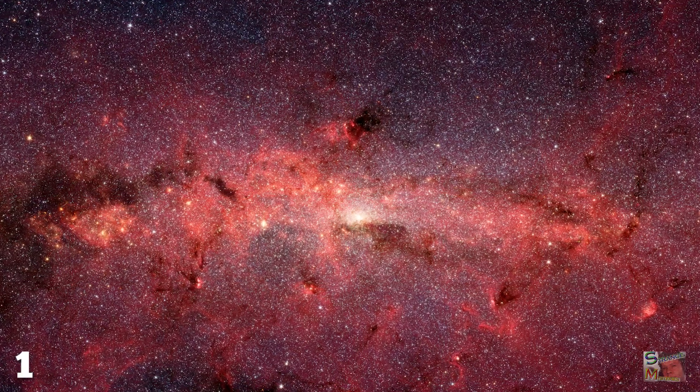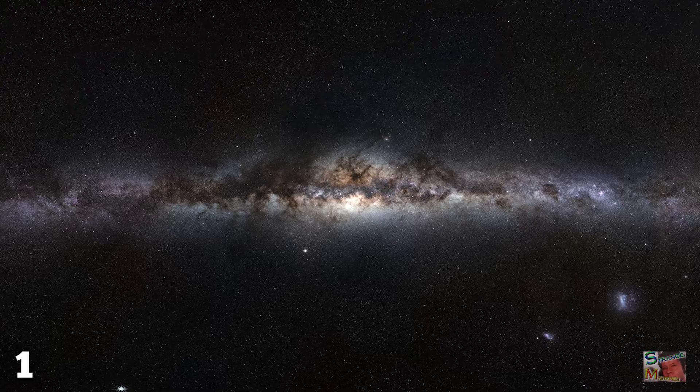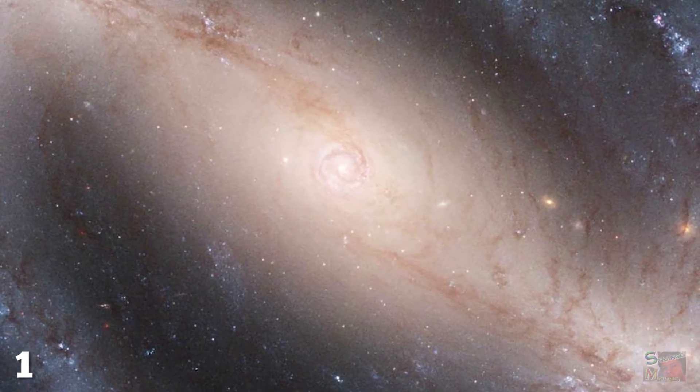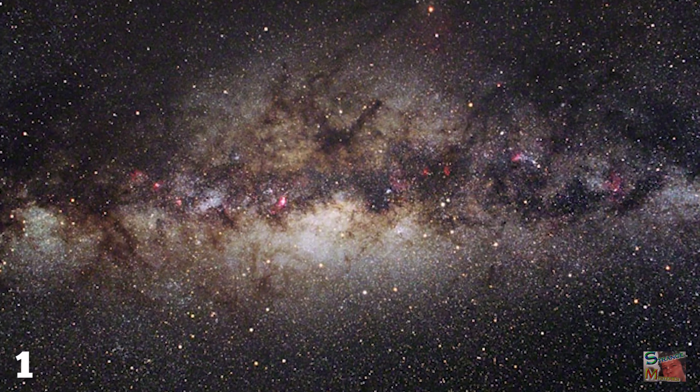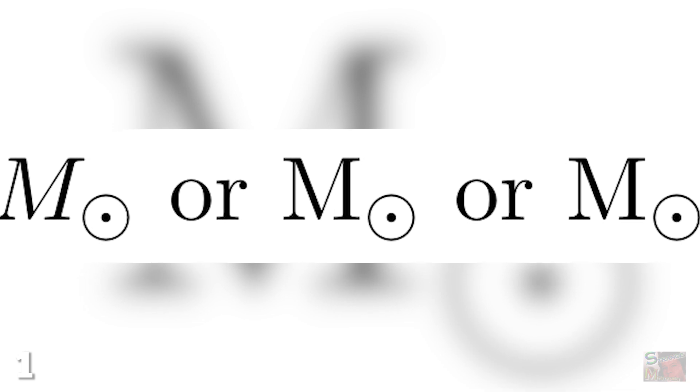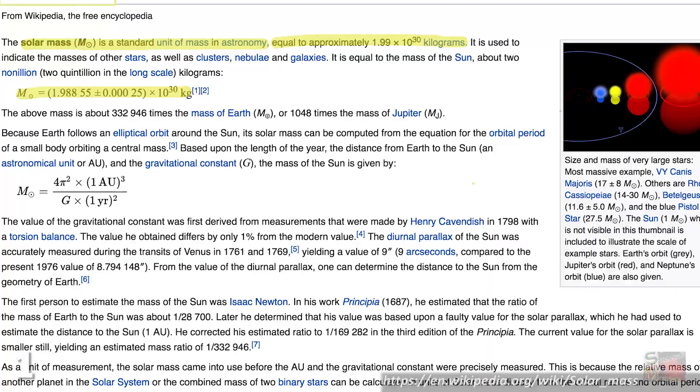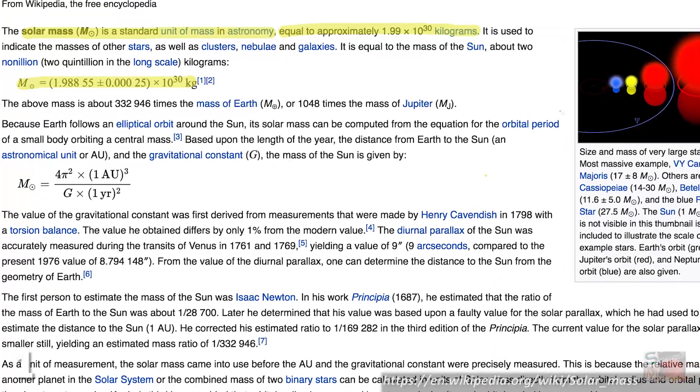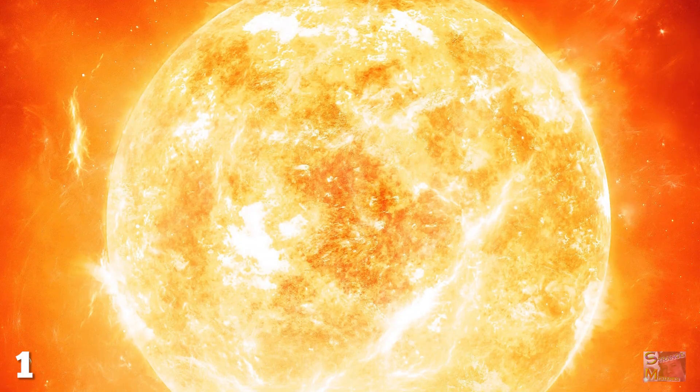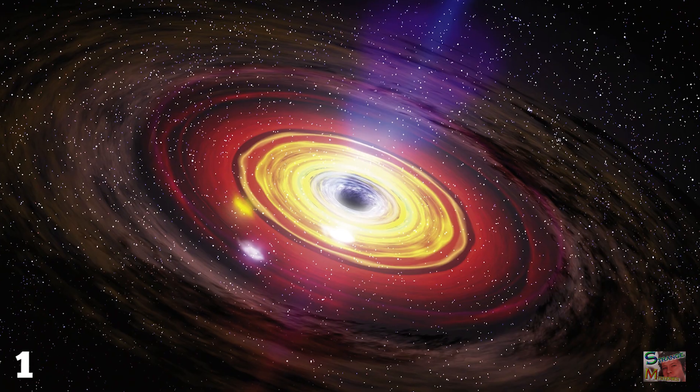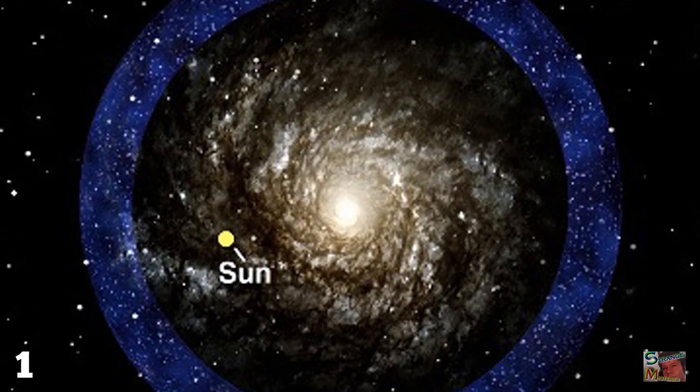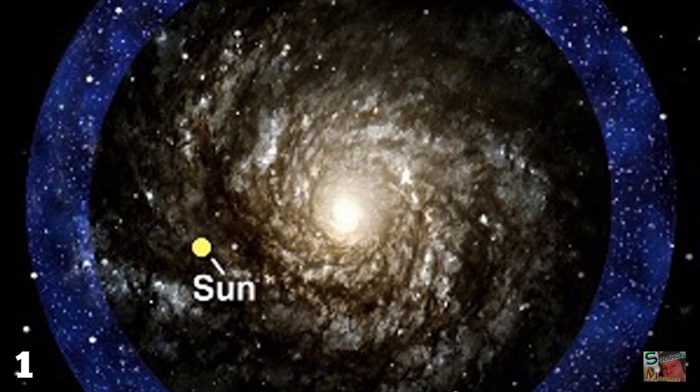Despite its name suggesting a dairy-based center, there is nothing creamy nor delicious about the heart of our star system. The Milky Way's core contains a supermassive black hole with the mass of 4.1 million mark larks. Oh, didn't know what the M with the tiny circle after it stands for? It's the symbol for solar mass, and since I couldn't find a pronunciation for it, I've decided to call it a mark lark. One mark lark is the equivalent of our sun's mass, and this supermassive black hole is 4.1 million mark larks, making it 4.1 million times the mass of our own solar overlord.